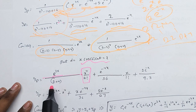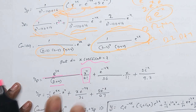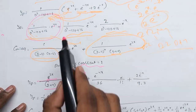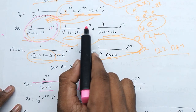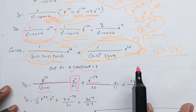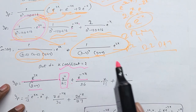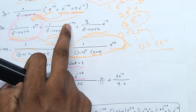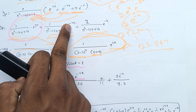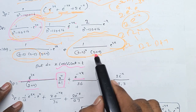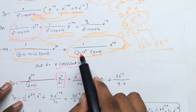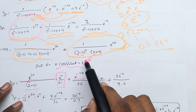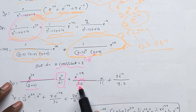2 plus 4. First term is plus 1 into e^(−4x). e^(−4x): minus 4 minus 2 gives minus 6; whole square gives 36.